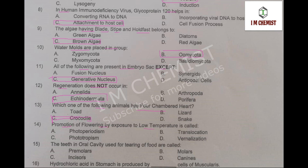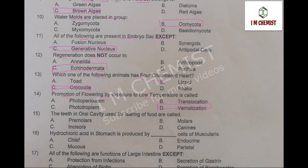MCQ number 14: promotion of flowering by exposure to low temperature is called. This is present at page number 267 of your book, and the right option is option number D — vernalization. MCQ number 15: the teeth in the oral cavity used for tearing of food — that is option number D, canines.